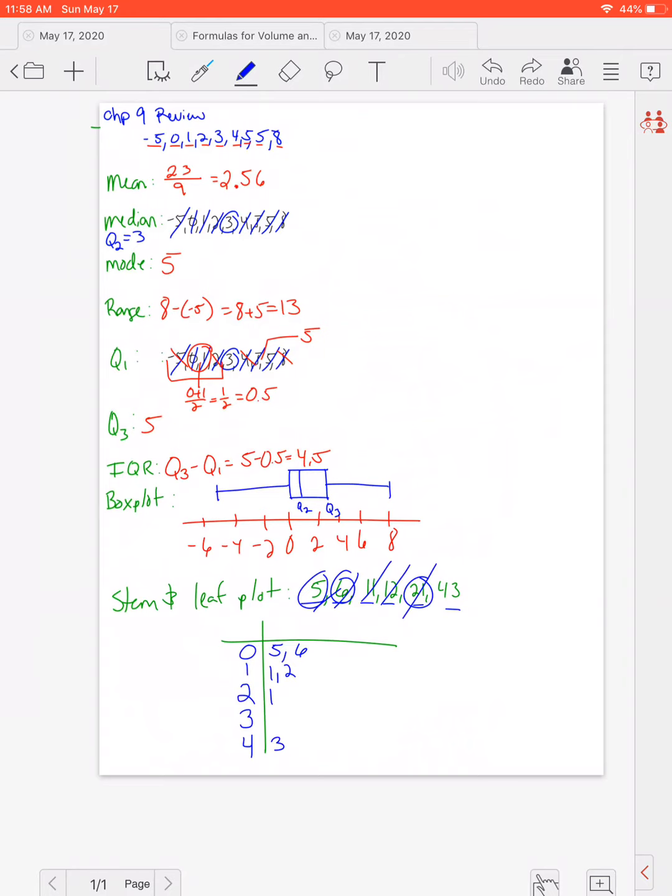So there you go. We covered mean, median, mode, range, quartiles, interquartile range, box plots, and stem and leaf plots in this chapter.